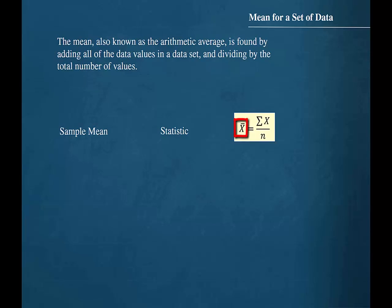The symbol X bar stands for the sample mean. The Greek symbol sigma that appears in the formula stands for summation. The letter X represents the values of the variable, which is the data values in the data set. The lower case n represents the number of data values in the data set.